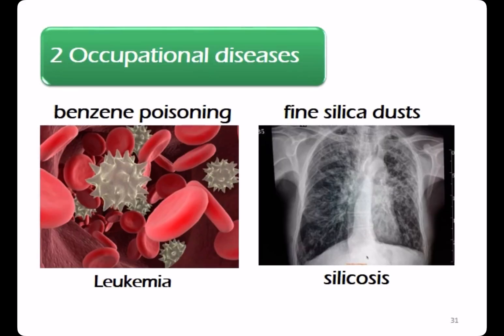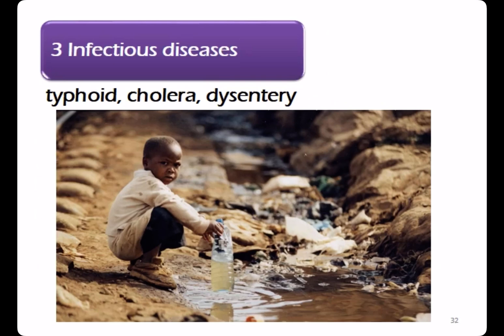Occupational diseases such as benzene poisoning can cause leukemia, and fine silica dust can cause silicosis. Biological pollutants can cause infectious diseases such as typhoid, cholera, and dysentery.